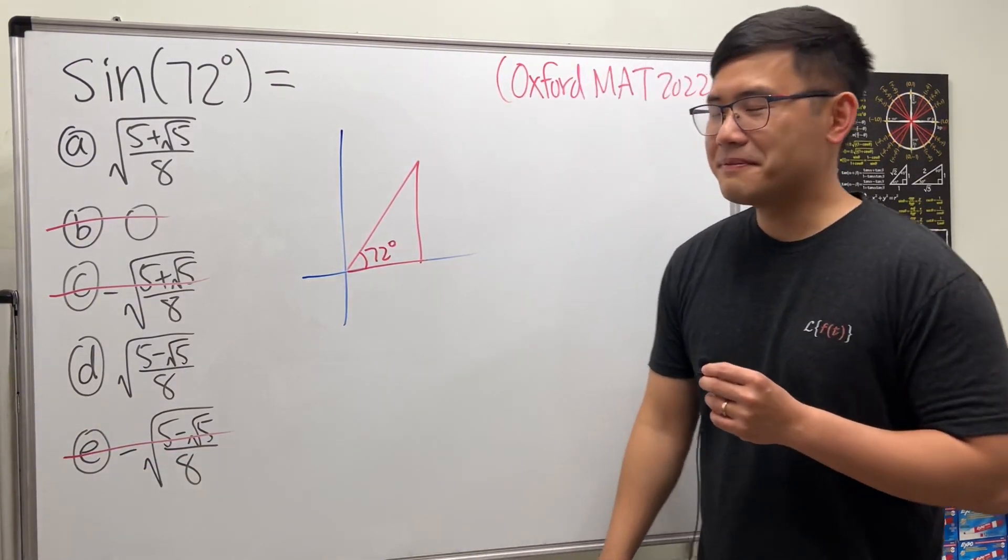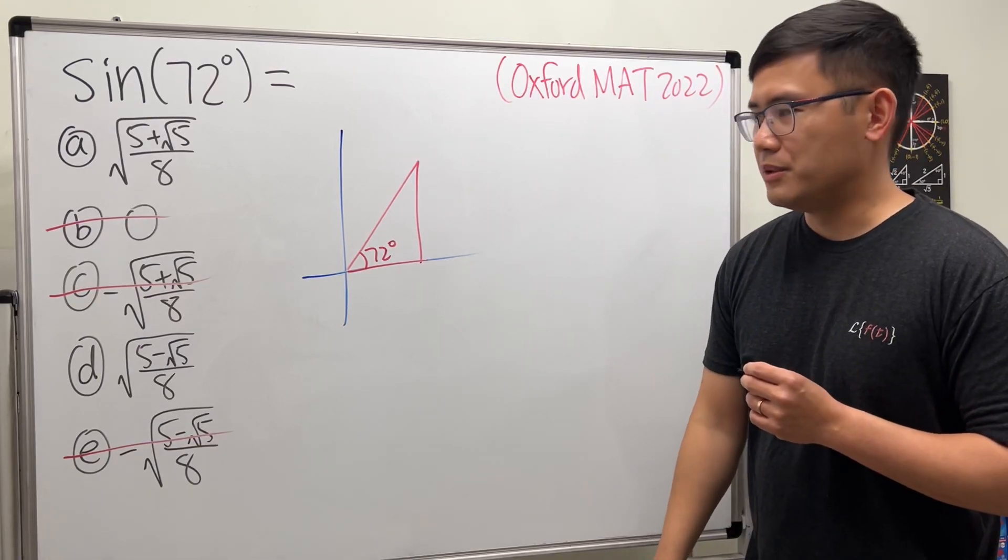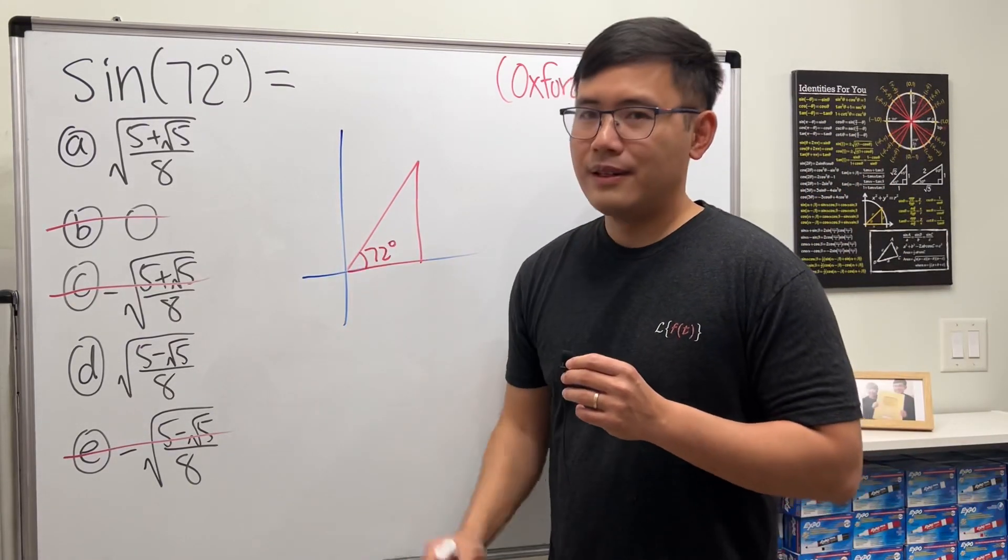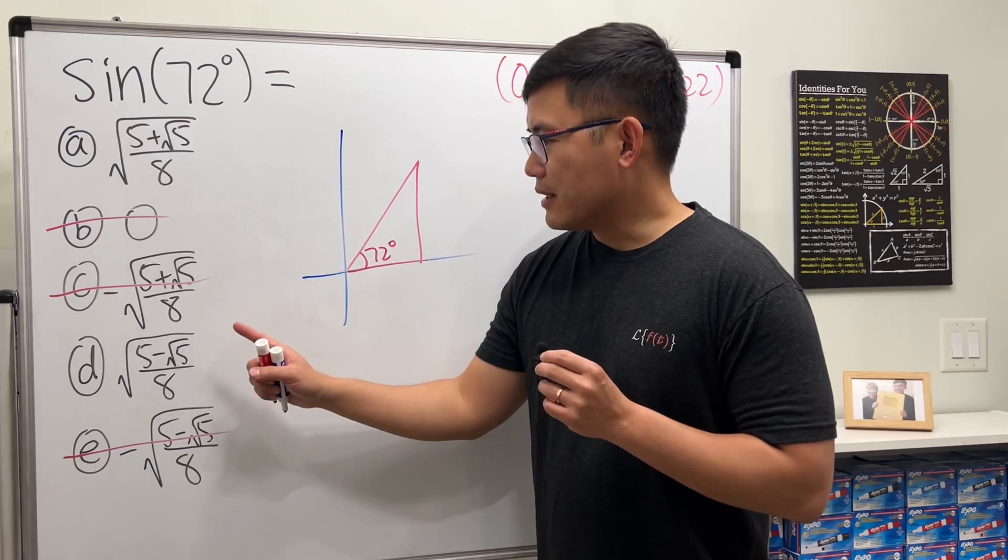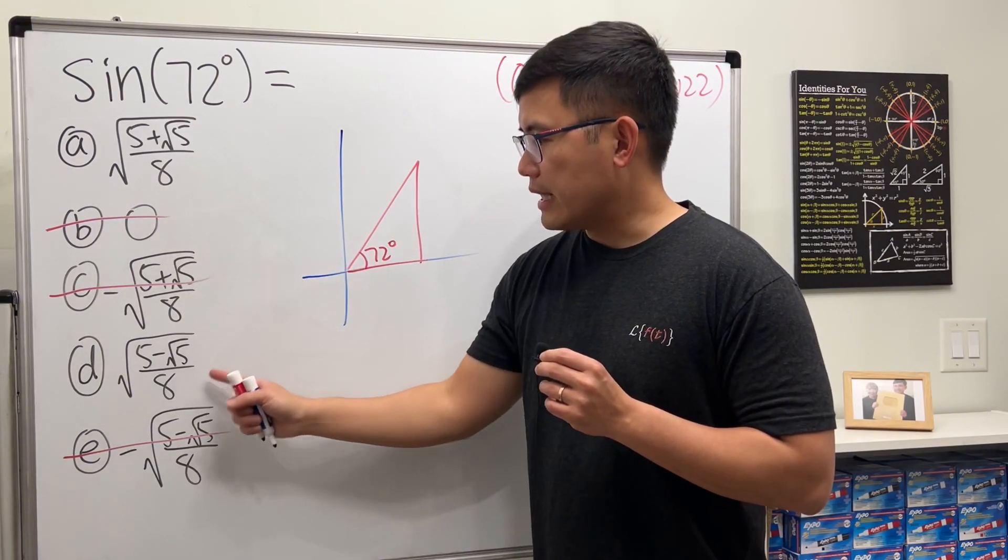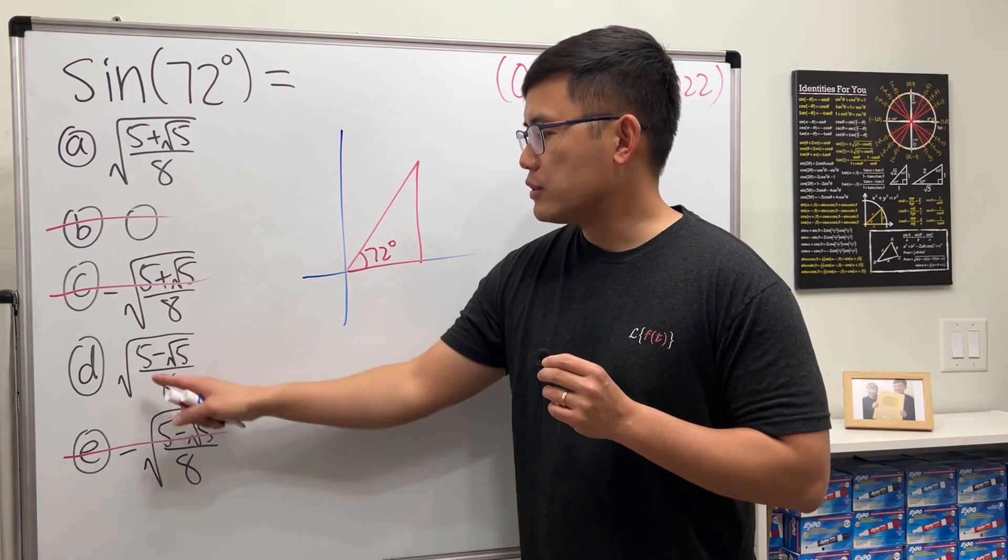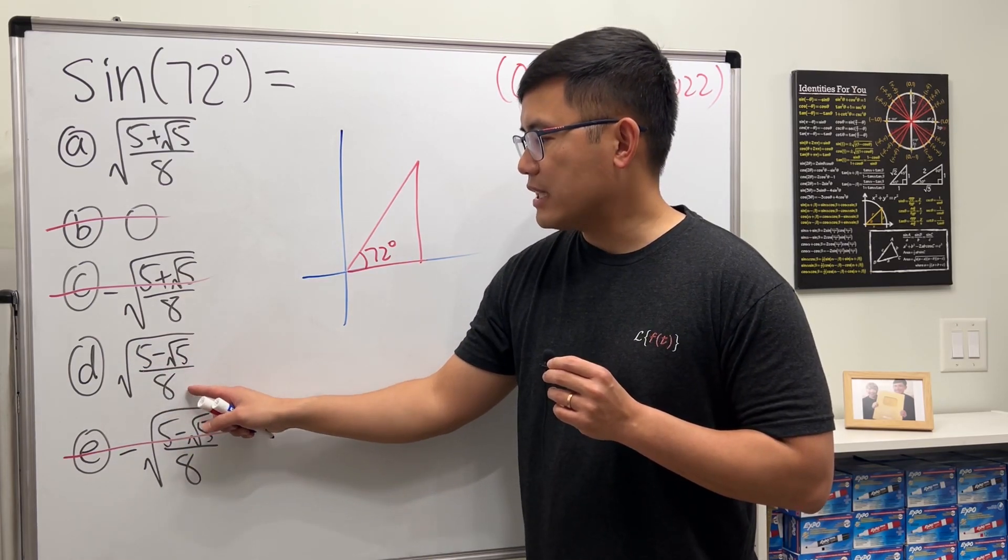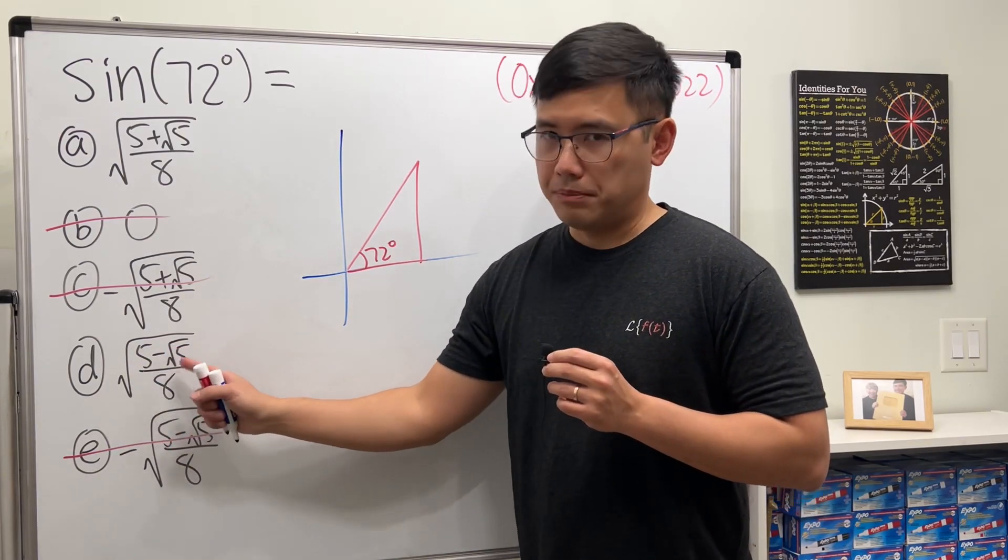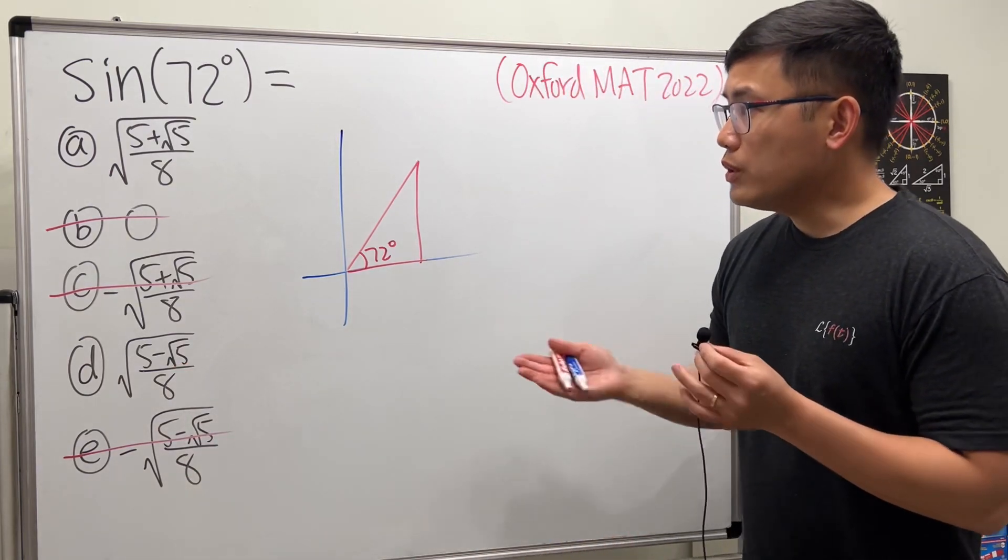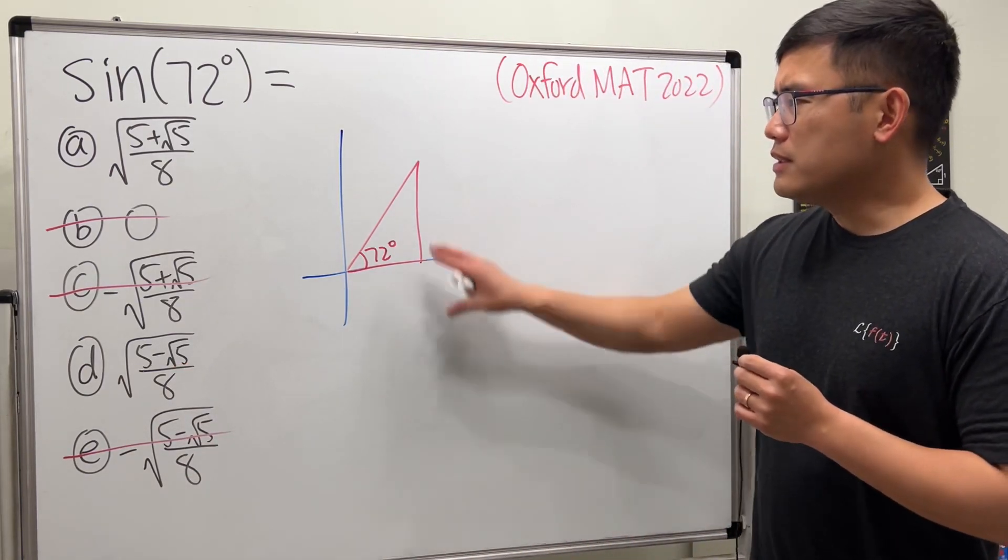But of course we have to be serious—which one? Well, here's the deal: this is bigger than that. And by the way, √5 is less than 5, so (5 - √5)/8, the input here is positive.